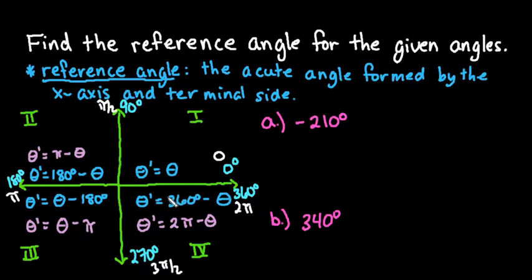In quadrant one, theta prime is what we put for the reference angle and theta prime is just going to equal the acute angle because everything in between here is either between zero and 90 or zero and pi over 2.